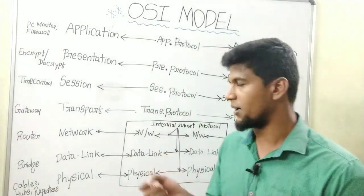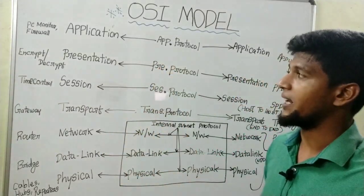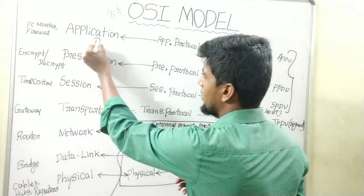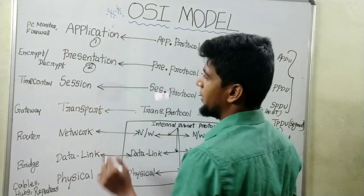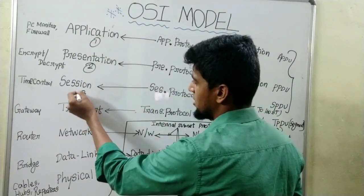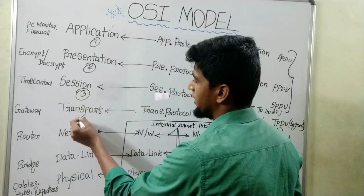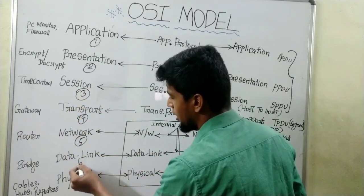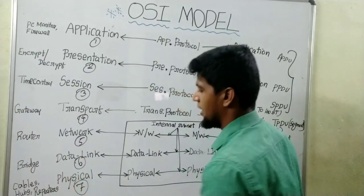Let's talk about the OSI layers. There are 7 layers: 1 — Application layer, 2 — Presentation layer, 3 — Session layer, 4 — Transport layer, 5 — Network layer, 6 — Data link layer, 7 — Physical layer.